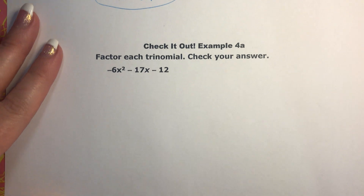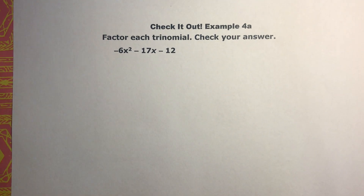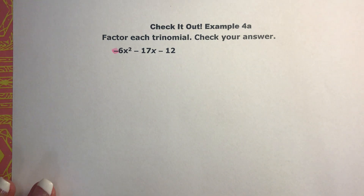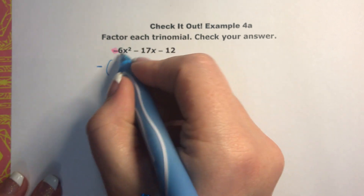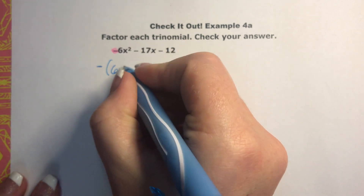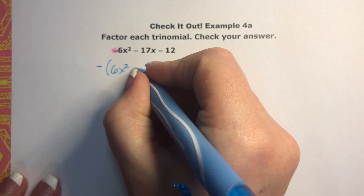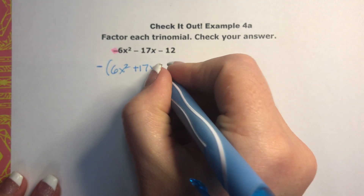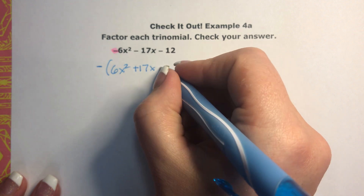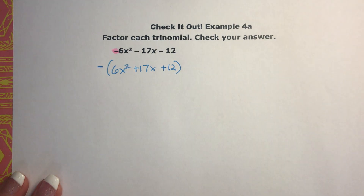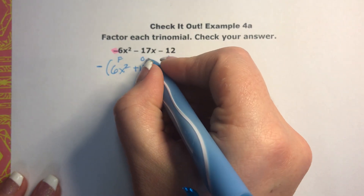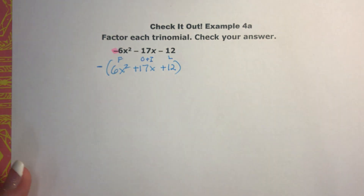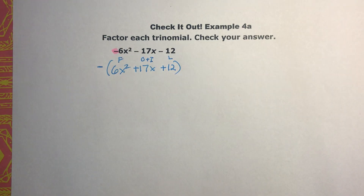Do you guys see that negative on the leading coefficient? So the first thing we're going to have to do is factor out that negative. Putting my negative there — factoring it out makes each term positive: positive, positive, positive. This is my first, this is my last, and I'm going to be adding the outside and the inside to get 17.